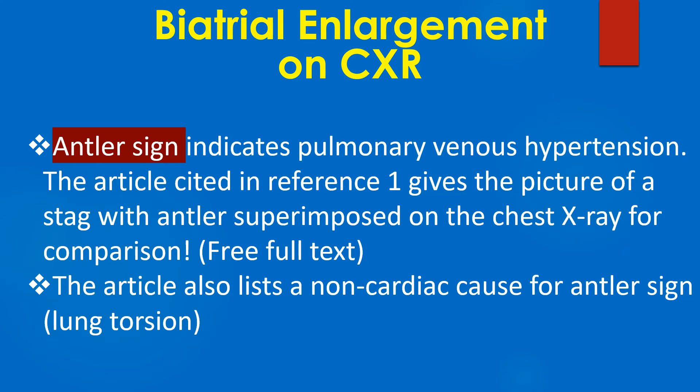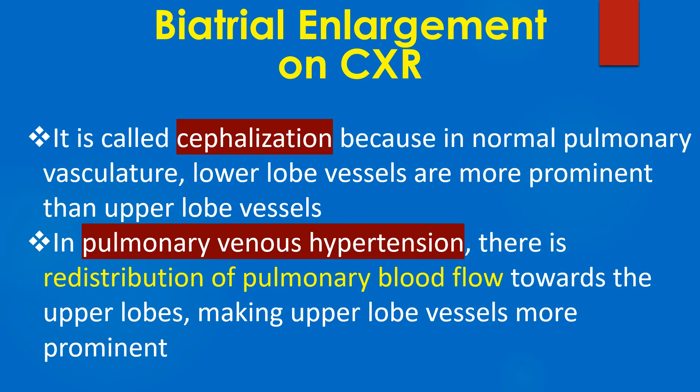The article cited in reference 1 gives the picture of a stag with the annular sign superimposed on the chest X-ray for comparison. The article also lists a non-cardiac cause for the annular sign — lung torsion. It is called cephalization because in normal pulmonary vasculature, lower lobe vessels are more prominent than upper lobe vessels. In pulmonary venous hypertension, there is redistribution of pulmonary blood flow towards the upper lobes, making upper lobe vessels more prominent.